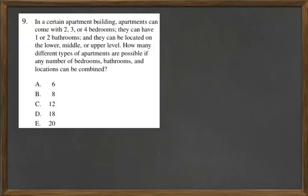In a certain apartment building, apartments can come with two, three, or four bedrooms. They can have one or two bathrooms, and they can be located on the lower, middle, or upper level.